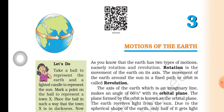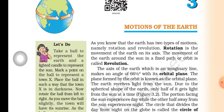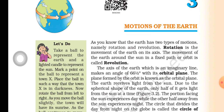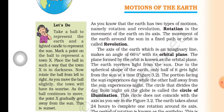There are two types of motion. One is rotation and another one is revolution. Rotation is the movement of the earth on its axis, and the movement of the earth around the sun in a fixed path is called revolution.